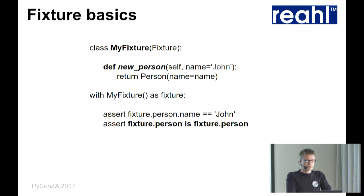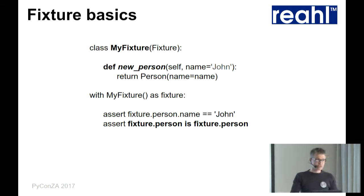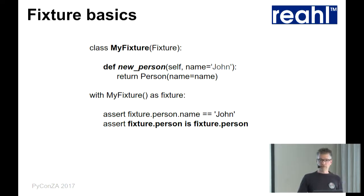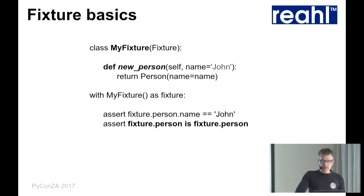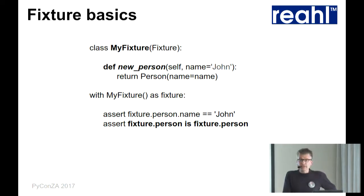The basics of a fixture: you just inherit from Fixture and for each object you want, you write a method prefixed with `new`. Inside it's pretty much like a PyTest fixture — it just needs to create a thing, and it can also yield it. We usually use keyword args that supply the defaults. You create a fixture and use it inside a `with` statement. Inside there you can refer to `fixture.person`, for example. It will automatically call that `new` function without arguments and give you the default person back. The second time you call it, it will still give you the same instance back.